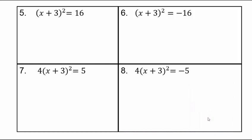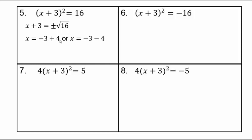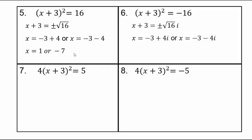For (x + 3)² = 16, take square root on both sides to get x + 3 = ±4, then subtract 3: x = 1 or x = -7. For the complex version (x + 3)² = -16, you get x + 3 = ±4i, so x = -3 + 4i or x = -3 - 4i. That's the only difference between the two problems.